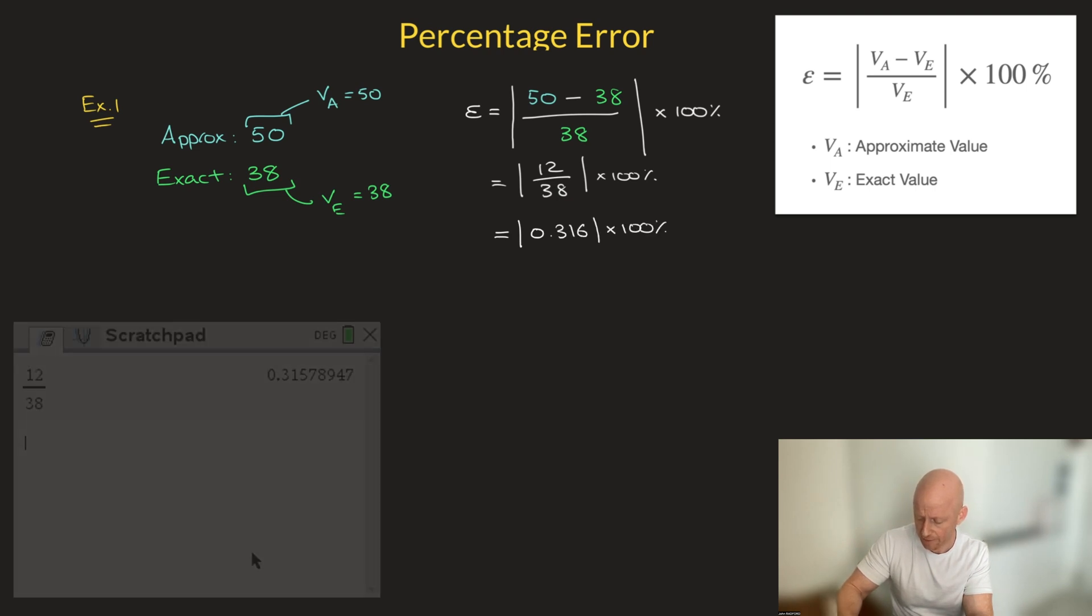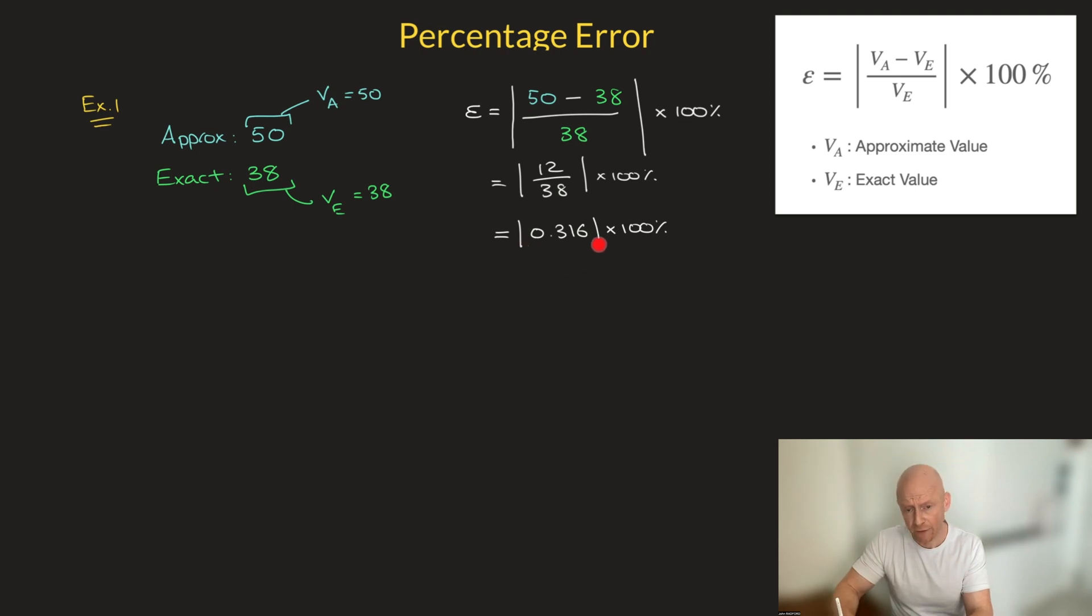And again, I multiply that by 100%. Okay, now what do we do with this absolute value? Well put simply, if the number inside the absolute value is positive, then the absolute value does absolutely nothing at all. In other words, we can just get rid of it and ignore it completely. So here, because 0.316 is positive, we can just get rid of these absolute values. And we can state that this equals to 0.316 times 100%. Finally, multiplying 0.316 by 100, we can state that the percentage error is equal to 31.6%. And that's the answer.